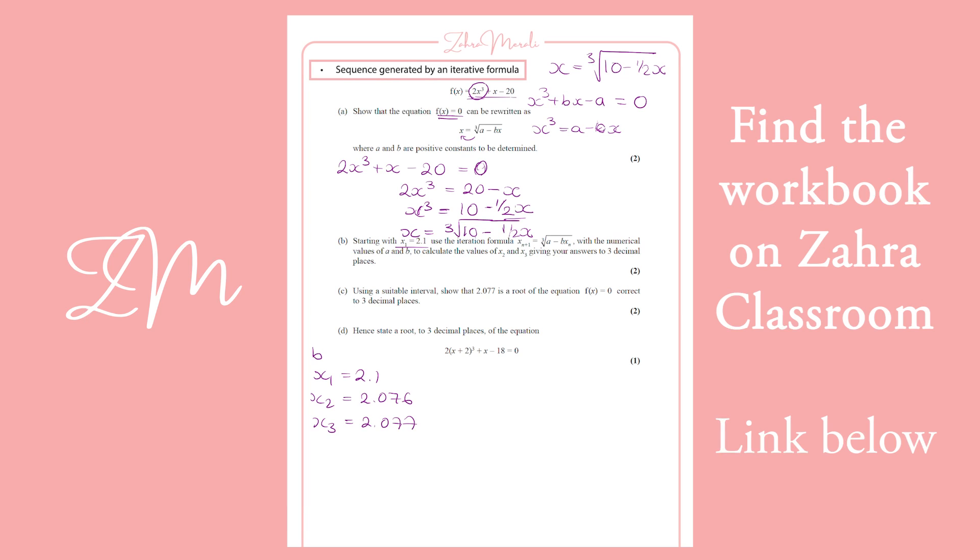So that's part b. For part c, we want to use a suitable interval and show that 2.077 is a root. So if we take 2.077, and we go at the top end, and we go at the bottom end.